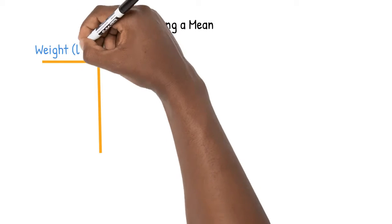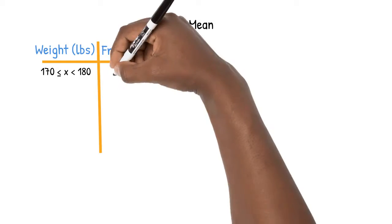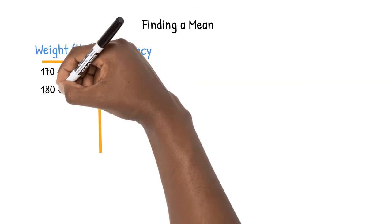Let's look at how to find the mean if we are presented with a table instead of a list. Between 170 and 180 pounds we have two people.